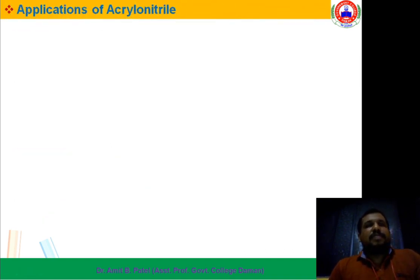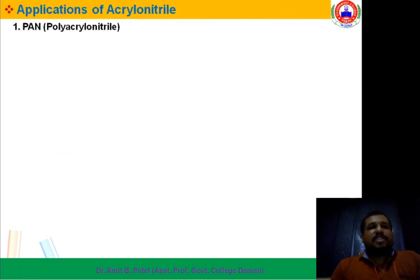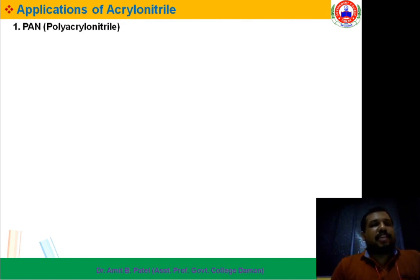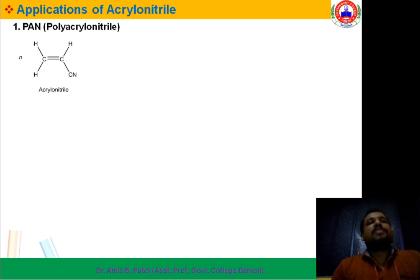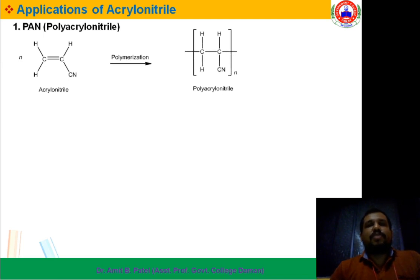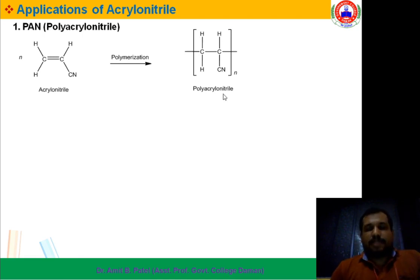Moving towards the application portion. First is PAN — Polyacrylonitrile. Polyacrylonitrile can be prepared by polymerization of Acrylonitrile. A number of different monomers of Acrylonitrile react together for polymerization to form Polyacrylonitrile. The double bond is removed and the repeating unit is CH2-CHCN, n times.